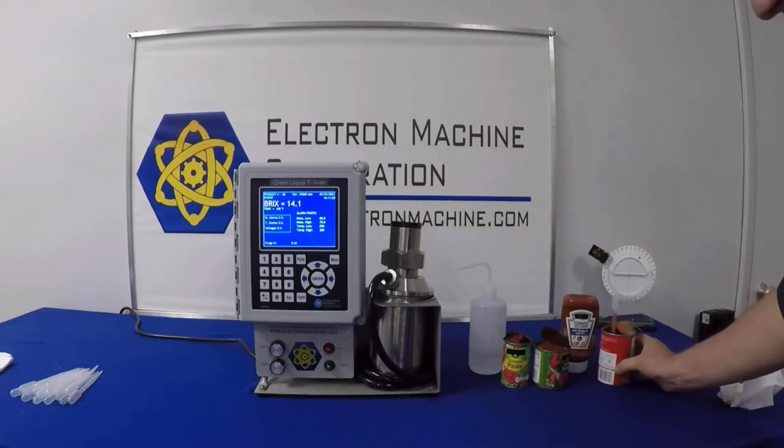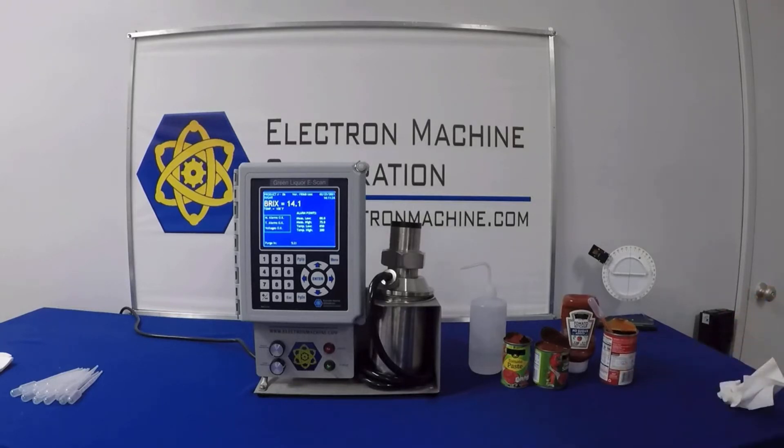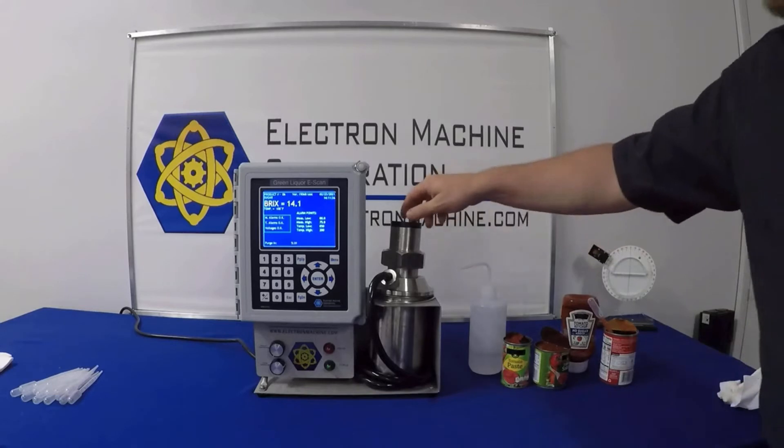Here we have what we would read as a 14 Brix unit. That doesn't necessarily measure how much sugar is in there. It's just letting you know that most of the water has been evaporated out of it. So we'll switch products.